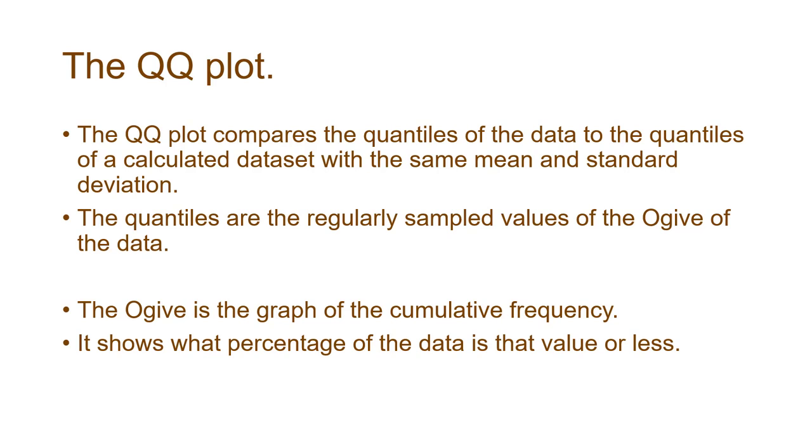The quantiles are regularly sampled values of the ogive of the data. The ogive is the graph of cumulative frequency. It shows what percentage of the data is valued as that value or less.